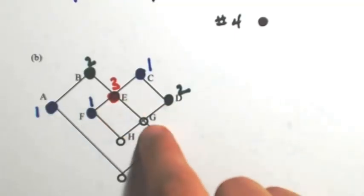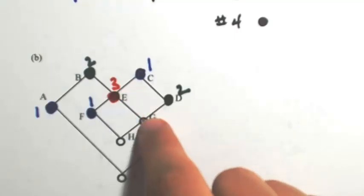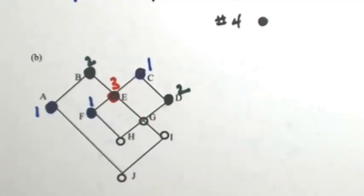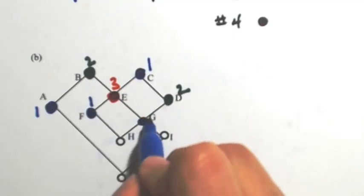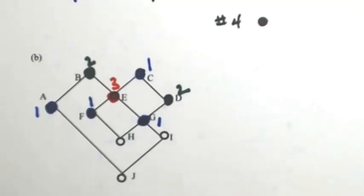G has a connection with 3 and 2, so I'm going to go back to 1 again. H is connected to 1 and 1, so the next lowest color would be the 2.